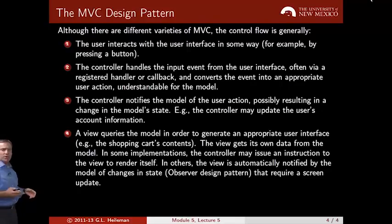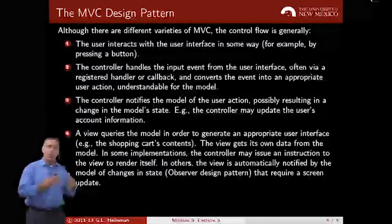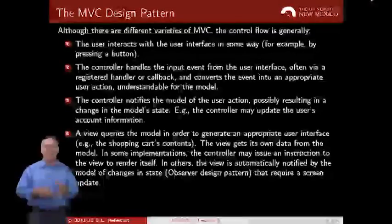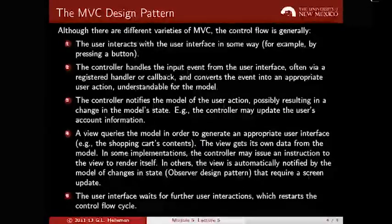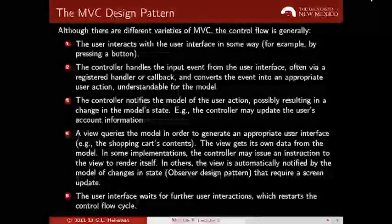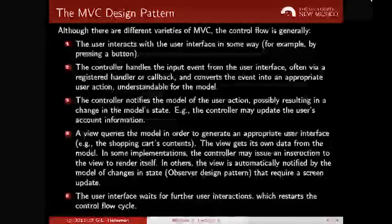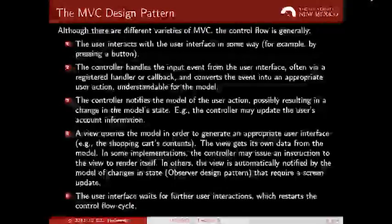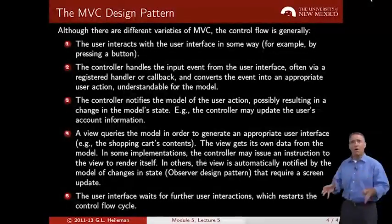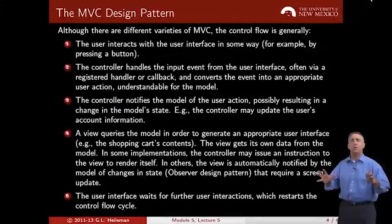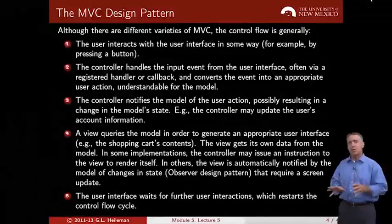You can also have an observer design pattern where the view is always watching the model, and every time it sees an update it automatically updates itself — but that's not how Rails does it. In Rails the controller is responsible for doing that. Then the cycle starts again: the user interface waits for further user interactions and the whole control flow repeats. This is the basic idea behind the model-view-controller design pattern — the partitioning of components and the flow through the architecture. We'll see how Rails does this shortly.